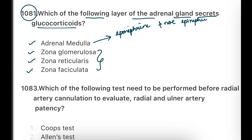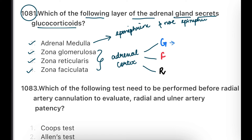Let me explain how to remember the adrenal cortex layers. The adrenal cortex has three layers. Remember them as G, F, R: G is Glomerulosa, F is Fasciculata, and R is Reticularis. This is the trick to remember these layers.